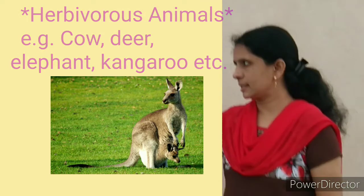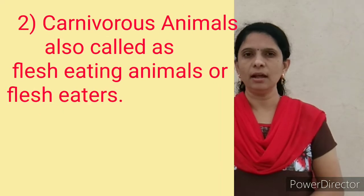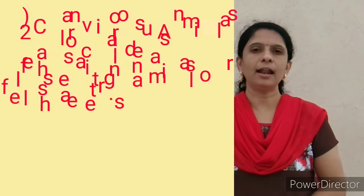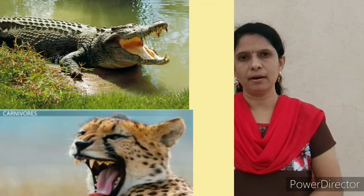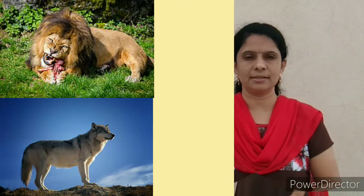The next class is carnivorous animals. Animals that hunt and eat the flesh of other animals are called carnivorous animals. They are also called flesh eaters or flesh-eating animals. For example: crocodile, leopard, lion, tiger, and wolf. These are generally wild animals that hunt and eat the flesh of other animals.